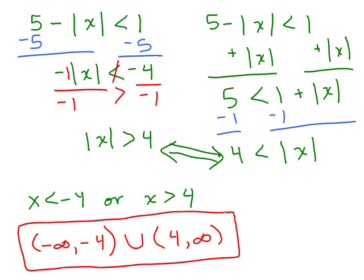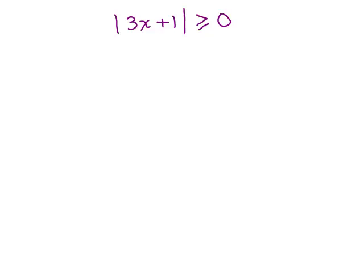The tricky part about that problem was the minus sign in front of the absolute value. Next tricky problem: absolute value of 3X plus 1 is greater than or equal to 0. All absolute values are greater than or equal to 0 because it represents a distance — it can't be less than 0 ever. So there are infinitely many solutions. It's all real numbers. It doesn't matter what you put in for X; when you take the absolute value you'll get either 0 or a number bigger than 0.